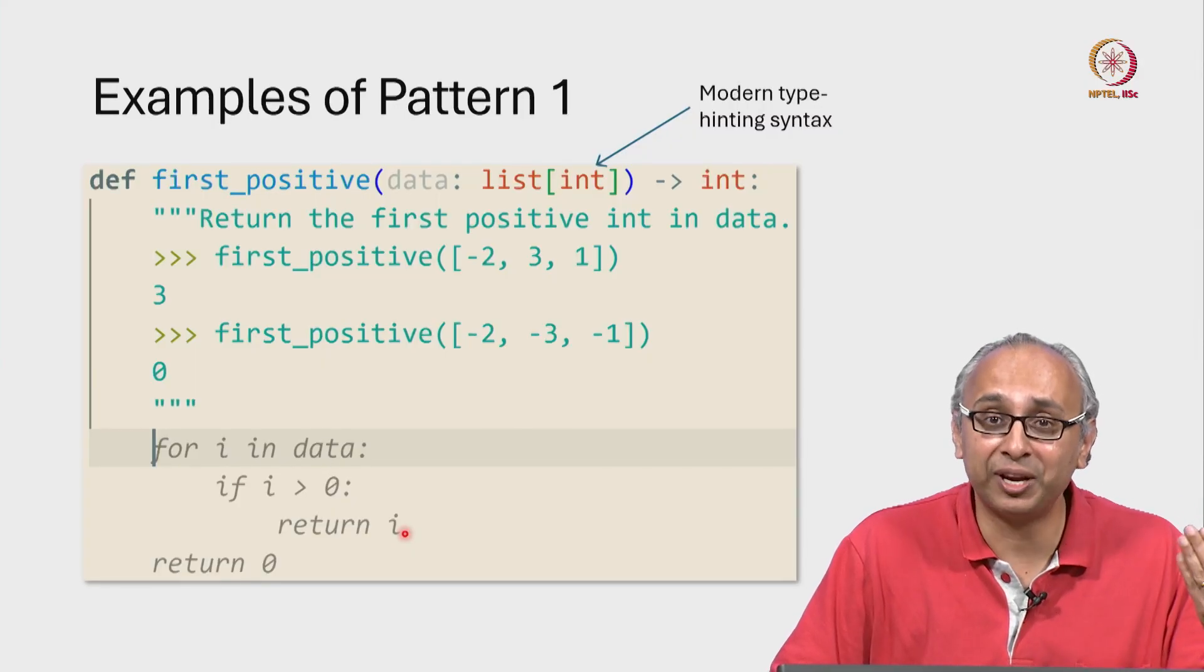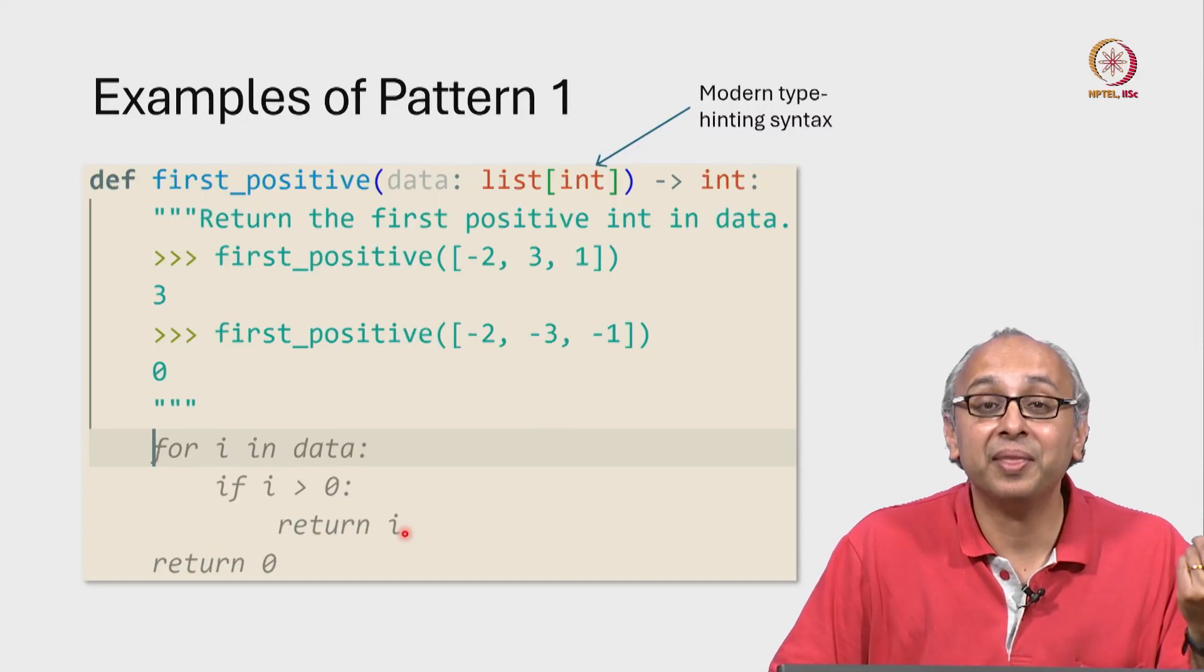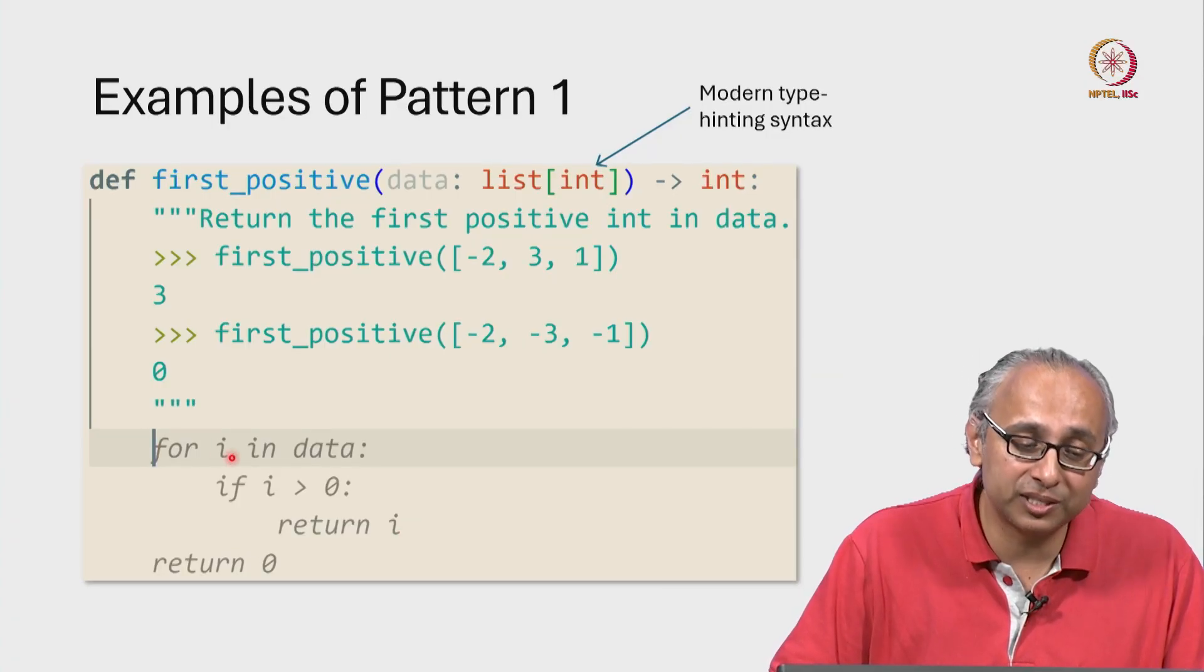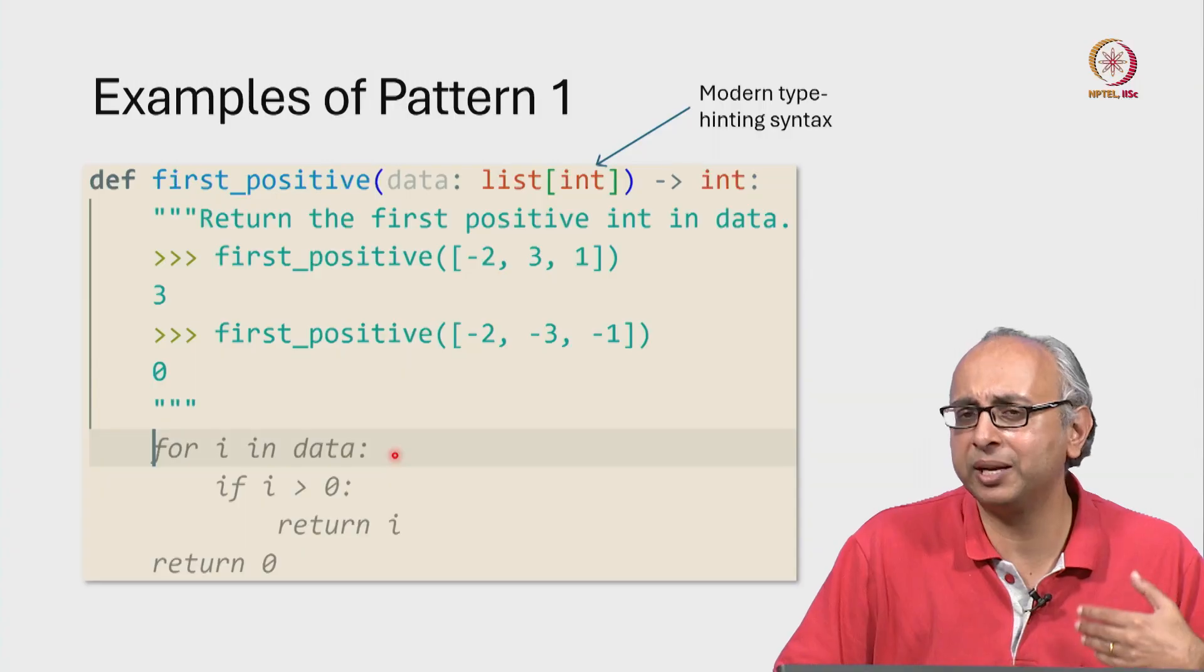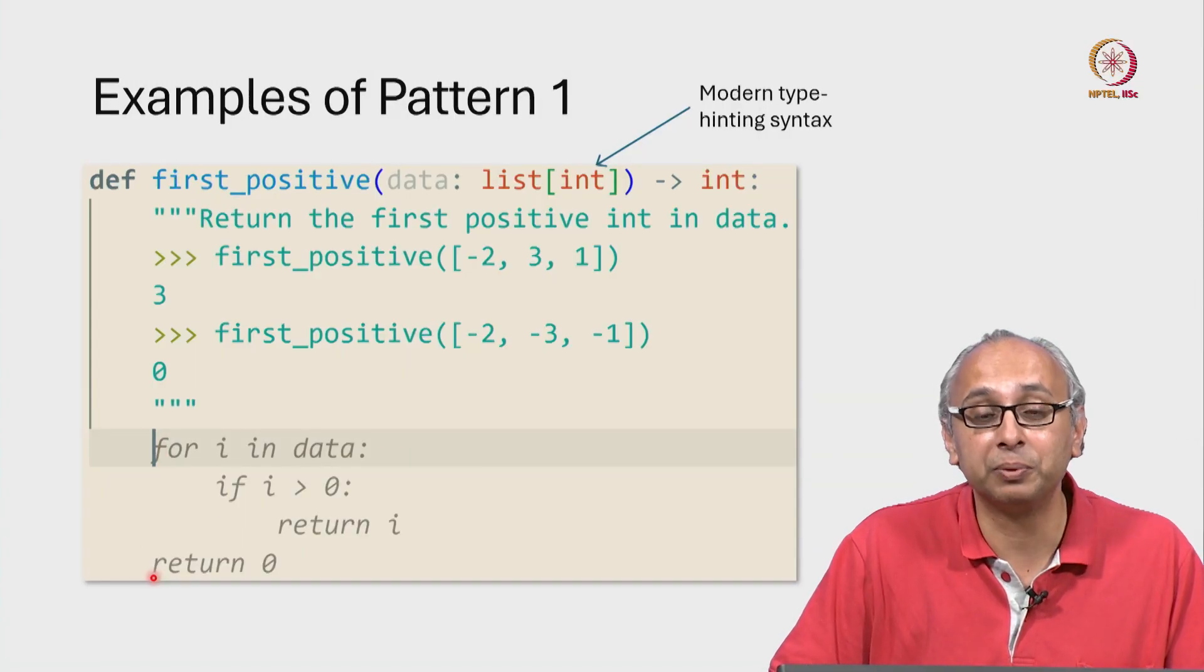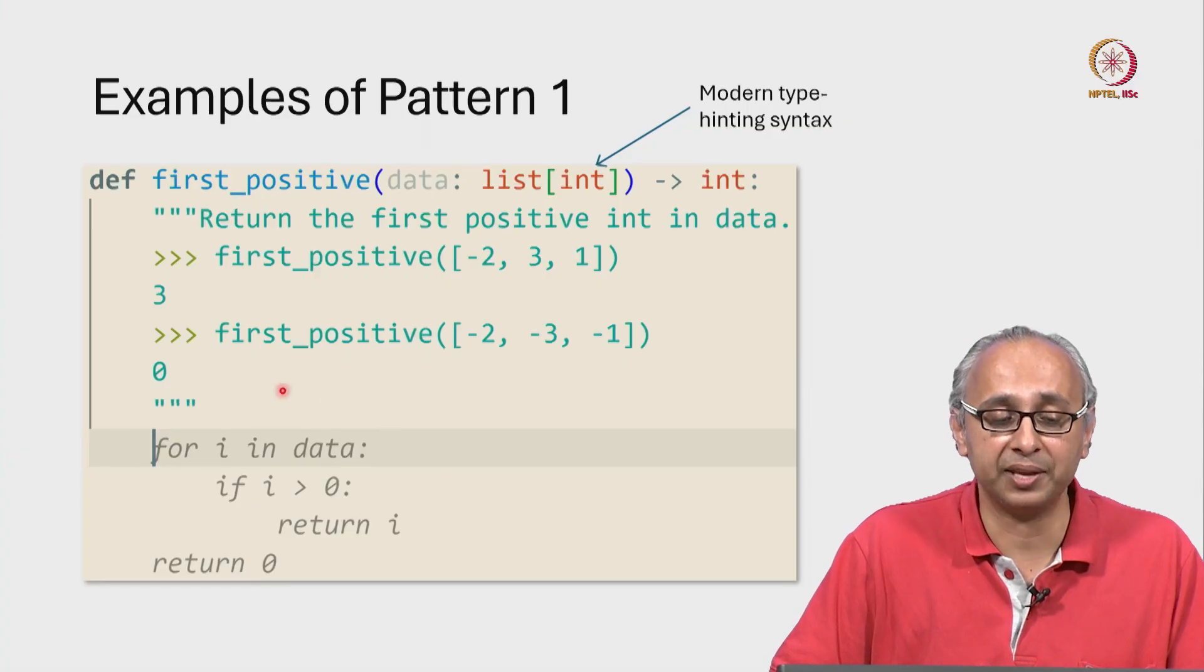So, again, this is iterate until success. And then, what if we don't find any integer i that is positive? Well, this loop will finish. We will examine every item and then we will come to the statement outside the loop and there we will return 0 as requested by this example.